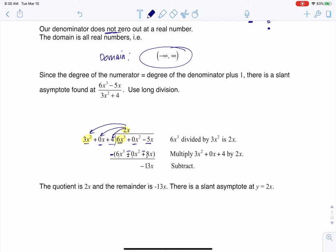So when I start to combine these, 6x cubed minus 6x cubed zeros out by design. 0x squared minus 0x squared cancels out by design. And then I have minus 5x minus 8x, and that's where I'm getting my negative 13x.